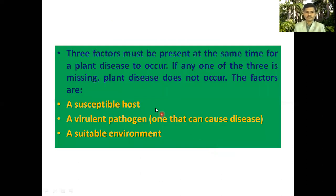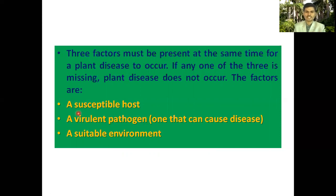As already discussed, all three factors must be present for any disease to occur. If any of these three aspects is missing — if the susceptible host is absent, or the pathogen is absent, or the environment is unfavorable — then disease will not occur. Therefore, for the development of any kind of disease there is a requirement of all three aspects.